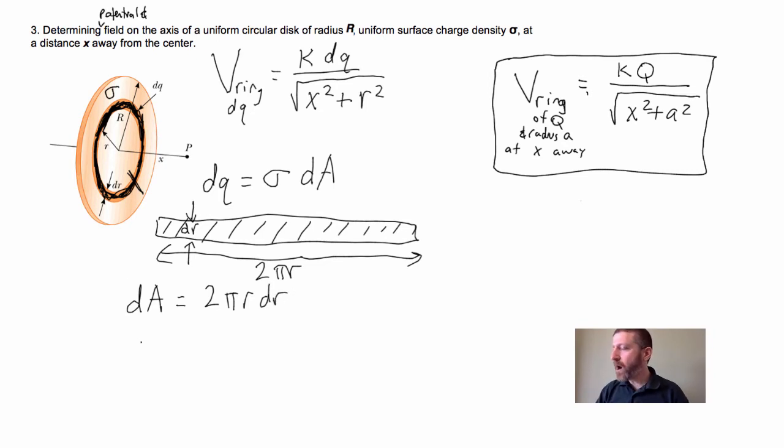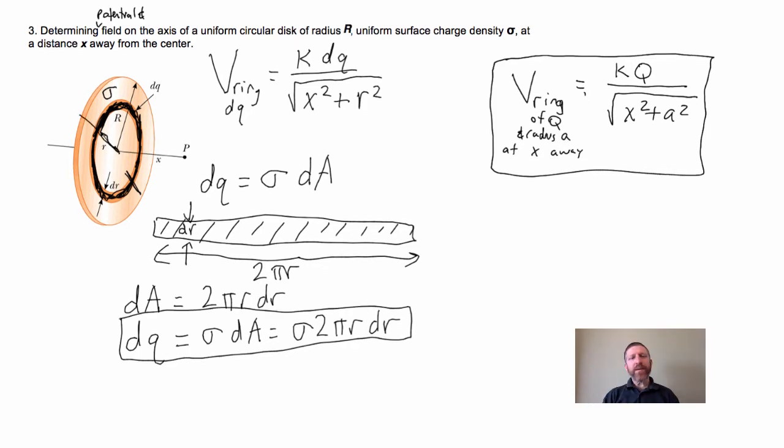Thus, our DQ we can express as sigma times DA, which is sigma times 2 pi R DR. So this is going to be very useful for us. Now we're going to have to integrate all infinity of these little rings of charge DQ. We've got to add an infinite number of those. So what we're going to do is integrate over the entire disk...